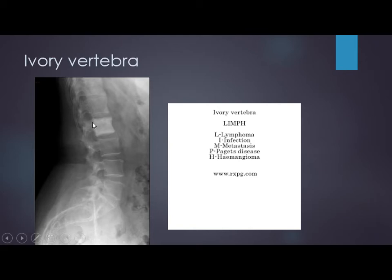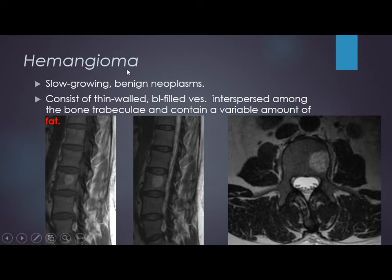Lymphoma, when focal, is one of the causes of ivory vertebra — a completely dense vertebra. Among the causes of focal abnormality in the bone marrow as primary tumors, we include aneurysmal bone cyst, giant cell tumor, chordoma, and hemangioma. We will discuss only hemangioma because we frequently see it, including atypical hemangioma.